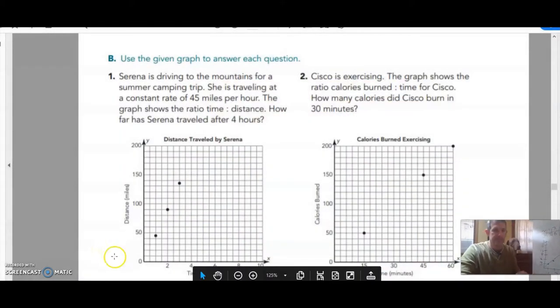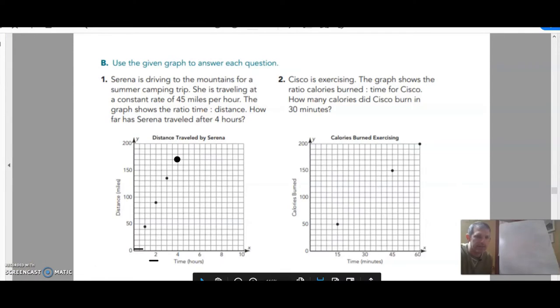Let's look at this first problem. So Serena is driving to the mountains for a summer camping trip. She's traveling at a constant rate of 45 miles per hour. The graph shows a ratio time to distance, how far Serena traveled after four hours.